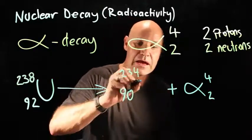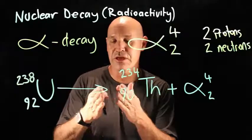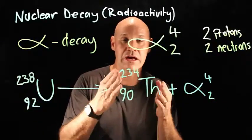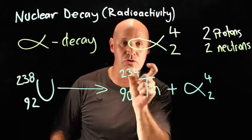And then you look up your periodic table and you find out what element has an atomic number of 90, and that is thorium. That is how you express alpha decay and how you calculate what the decay product is, what that new atom is.